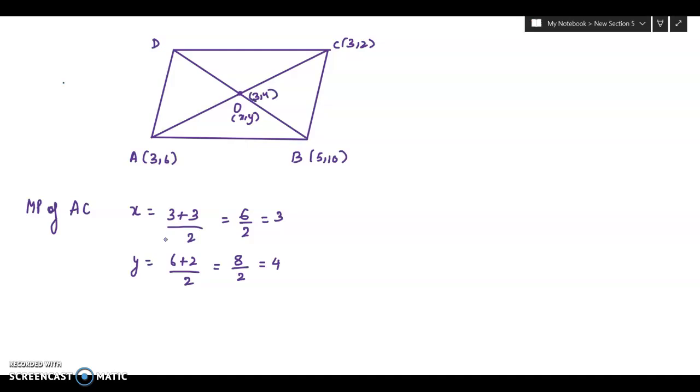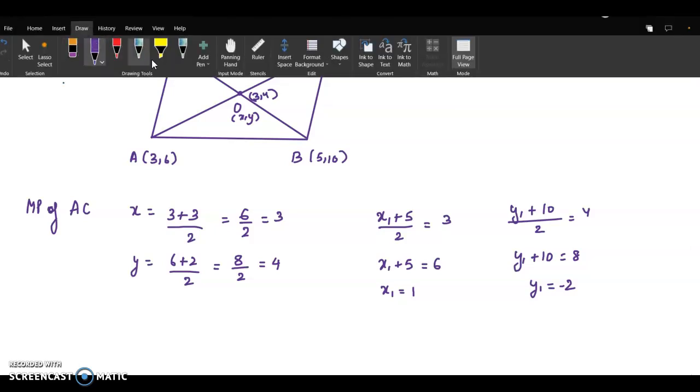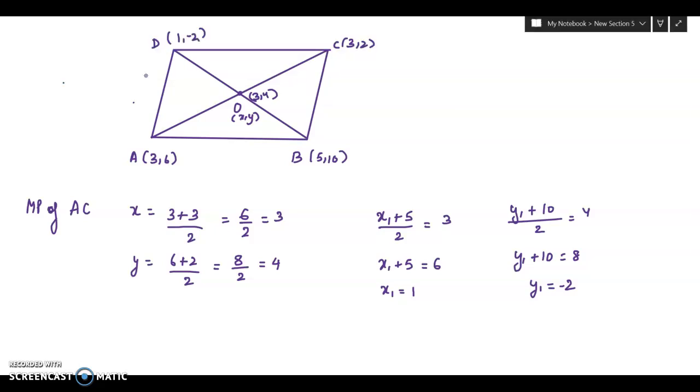Now for DB, we have to find out the coordinates of D. Let us assume the coordinates are x1 and y1. x1 plus 5 divided by 2 is equal to 3. And y1 plus 10 divided by 2 is equal to 4. Finding out the coordinates of D, x1 will be 1 and y1 will be minus 2. So the coordinates here will be 1 comma minus 2.